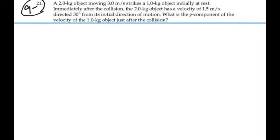A 2 kg object moving 3 m per second strikes a 1 kg object initially at rest. Immediately after the collision, the 2 kg object has a velocity of 1.5 m per second directed 30 degrees from its initial direction of motion. What is the y component of the velocity of the 1 kg object just after the collision?